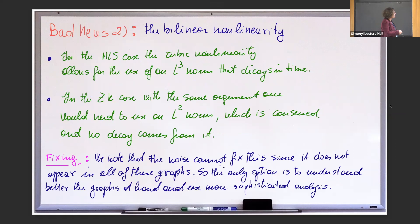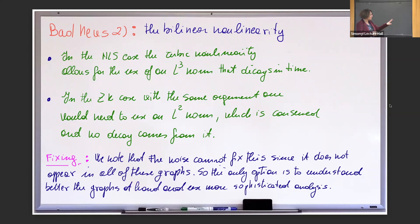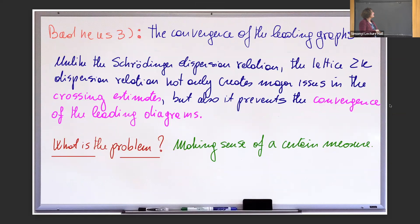Bad news number two: this is about having bilinear nonlinearity. If you do the same kind of thing for NLS — cubic NLS — you end up with some L^3 norm which is decaying in time. But if you do the same kind of thing for the ZK equation, you end up with an L^2 norm, which is conserved — so it's not going to give you decay. You have to do other things; in particular, approach it in a weaker way.